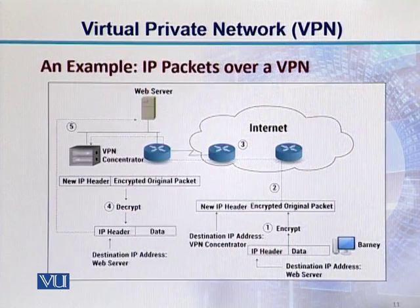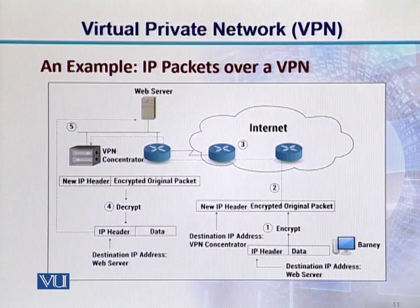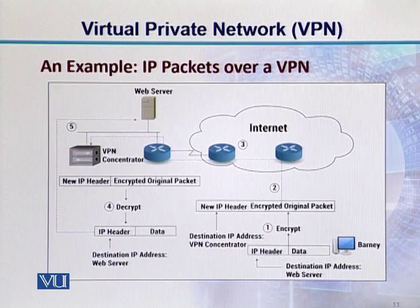If we look at this diagram, Barney is shown towards the bottom right-hand side. Barney's computer generated an IP packet. That IP packet has an IP header and data. Under the IP header, there is a destination IP address — the destination IP address of the web server shown above. Barney wants to communicate with that web server. So in the first step, if he is using VPN, what happens? The IP header and the data get encrypted.